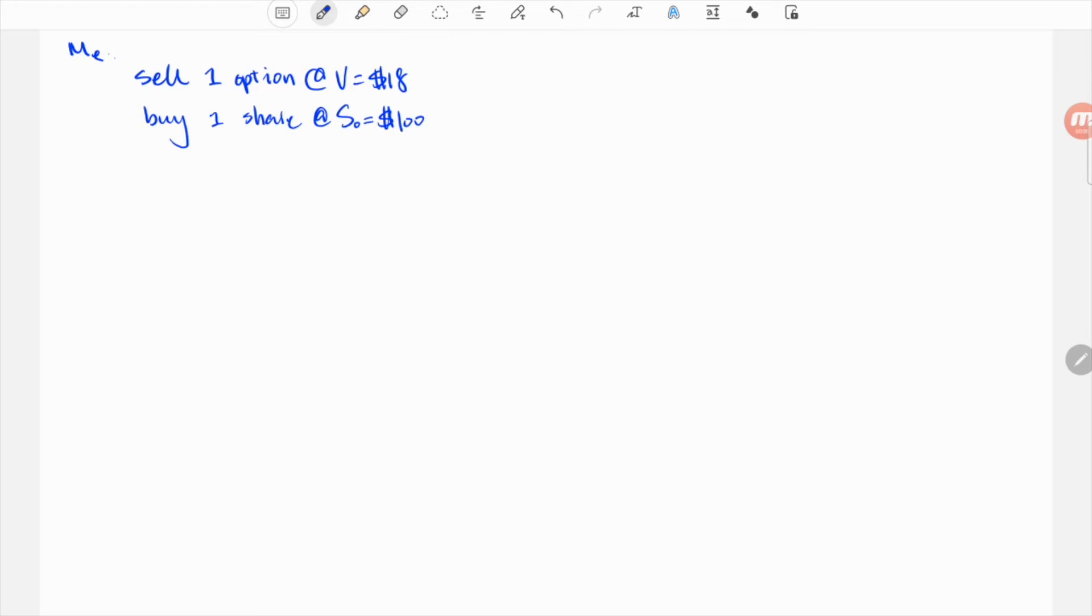Now let's see what the payoff would be for this portfolio. Scenario one: the stock goes to $120, which according to you has 90% probability. In this case the option matures in the money and I need to sell you one share at $100, the strike price, which you can sell for $120 for the $20 difference and the $2 profit after you subtract the $18 cost.